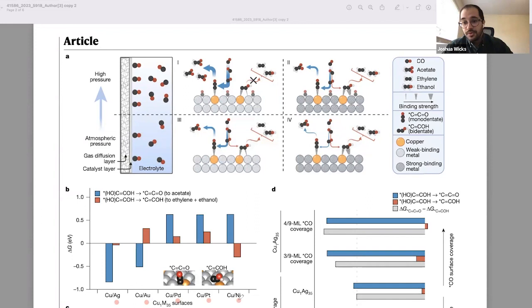And so silver and gold are similar. They both have generally a weak adsorption to CO. And then palladium, platinum, and nickel were our counter examples. They typically have a stronger adsorption to CO. And so what we found was that silver and gold similarly had a preferential selectivity in terms of reaction energetics towards acetate in comparison to the bidentate, ethylene, and ethanol pathway.